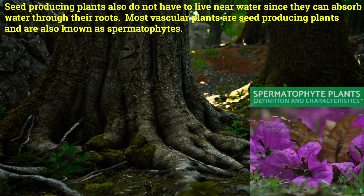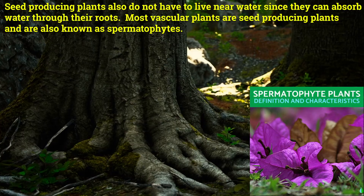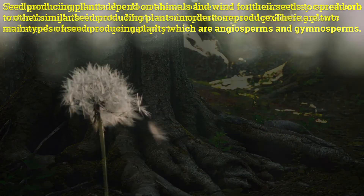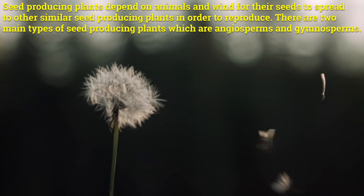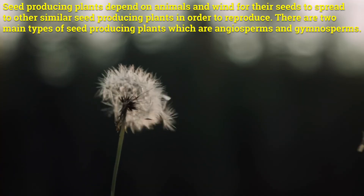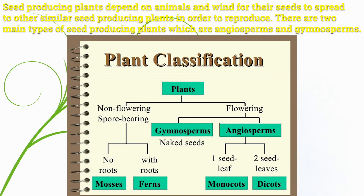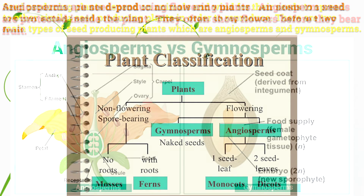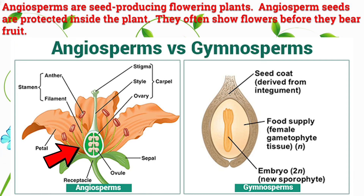Most vascular plants are seed-producing plants and are also known as spermatophytes. Seed-producing plants depend on animals and wind for their seeds to spread to other similar seed-producing plants in order to reproduce. There are two main types of seed-producing plants: angiosperms and gymnosperms.